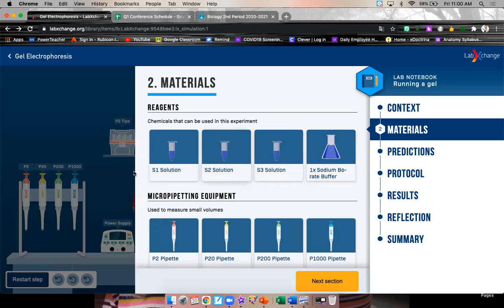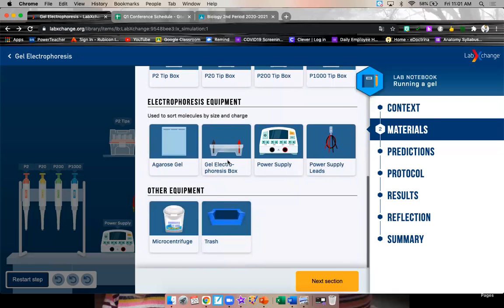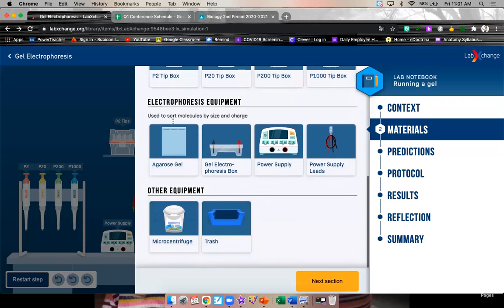So your materials. Solution one, two, and three are three samples of DNA. The sodium bromate buffer is the liquid that this all stuff is going to be working in. This is basically salt water. Salt water helps electricity move better. Then we got some pipettes and pipette tips. So they're like really fancy eye drops. We have our agros gel that we're going to study the DNA in. We're going to put the agros gel in the electrophoresis box. This is what we are going to run electricity through. We have a power supply and some wires, and we have this thing called a centrifuge. We're actually going to spin our samples to get the DNA to settle down in the bottom. And then a trash can.